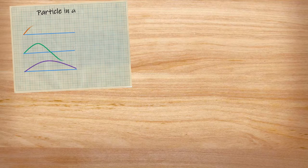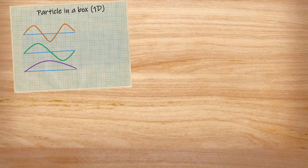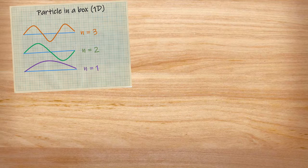While the details are best left to a dedicated quantum mechanics course, we start with confining a particle to a one-dimensional box, like a wire or string. This model tells us where quantization of energy comes from: only certain waves fit in a box, and therefore only certain energies do.